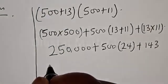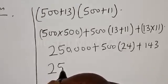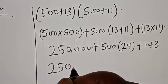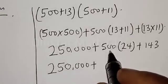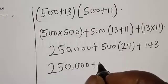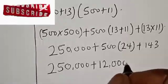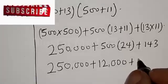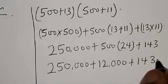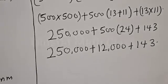Then we have 250,000 plus 500 times 24, that is 12,000, plus 143. Now let's add everything together.